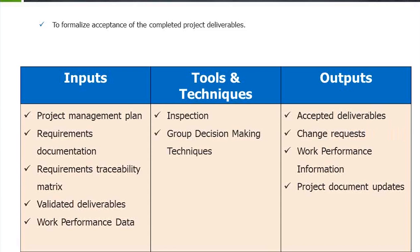The next process is verify scope — to formalize acceptance of the completed project deliverables. The customer does the verification. Inputs are the project management plan, requirements document, requirements traceability matrix, validated deliverables, and work performance data. Tools and techniques are inspection and group decision-making techniques. Outputs are accepted deliverables, change requests, work performance information, and project document updates.